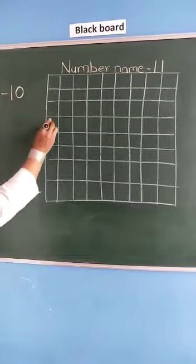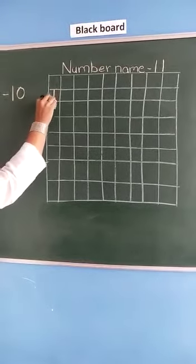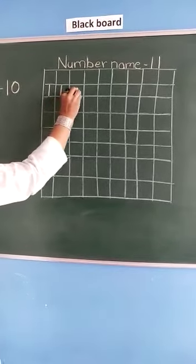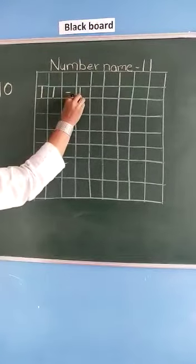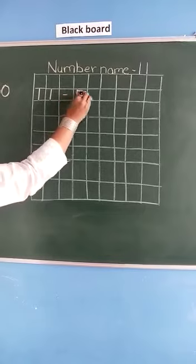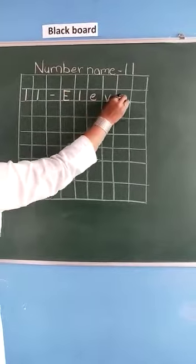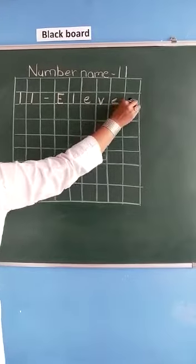So in this first line, we will write here 11, 11, small dash, we will write here E, L, E, V, E, and N, 11.